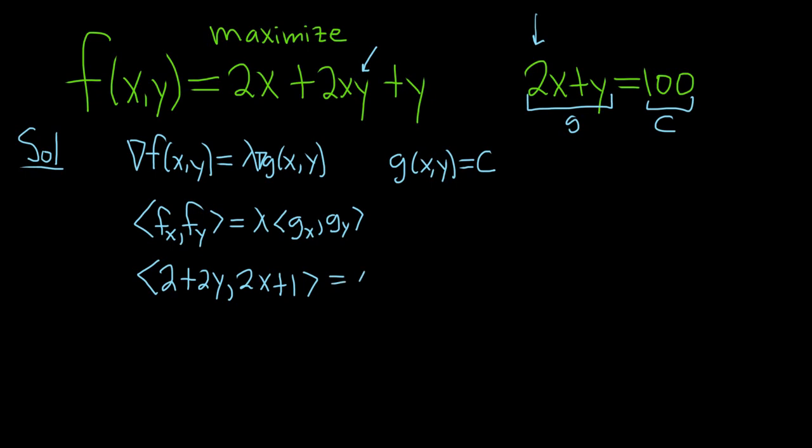That's equal to lambda, and then we have the partial derivative of g with respect to x. This is our g over here, so it's just going to be 2, right, because the derivative of y is 0 and the derivative of 2x is 2. The partial derivative of g with respect to y is 1, right, because 2x, that goes to 0.